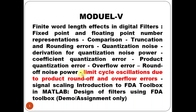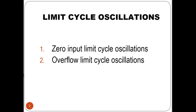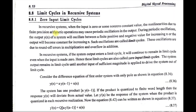The next part in the syllabus is limit cycle oscillations due to product round-off and overflow errors. There are two types of limit cycle oscillations in DSP: zero input limit cycle oscillations and overflow limit cycle oscillations. In digital systems, there is a chance of an output existing even though the input is zero. This output can be a constant or can oscillate between a positive and a negative value, due to the quantization effect.